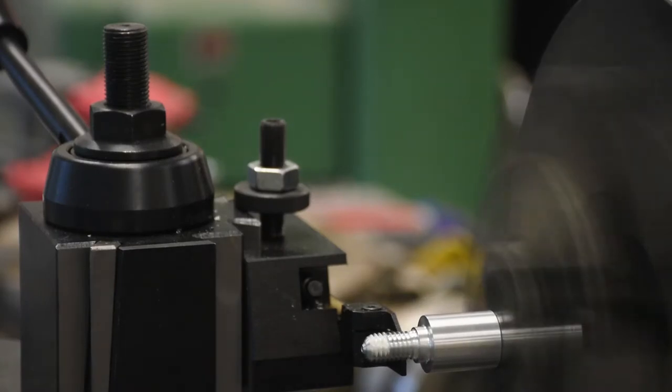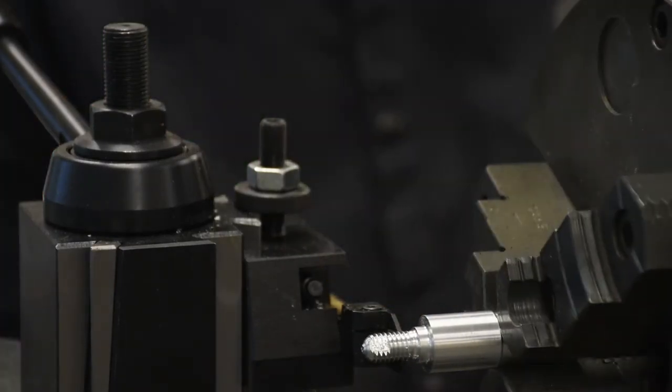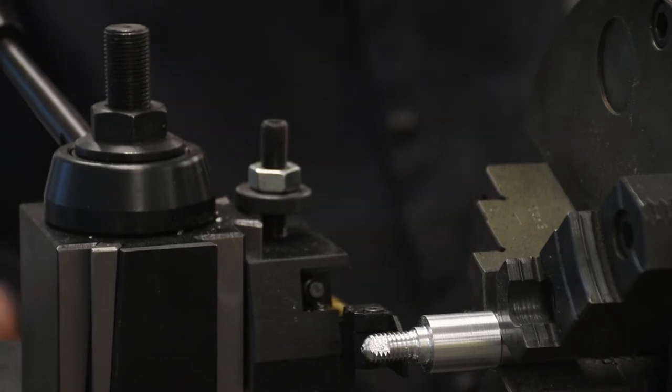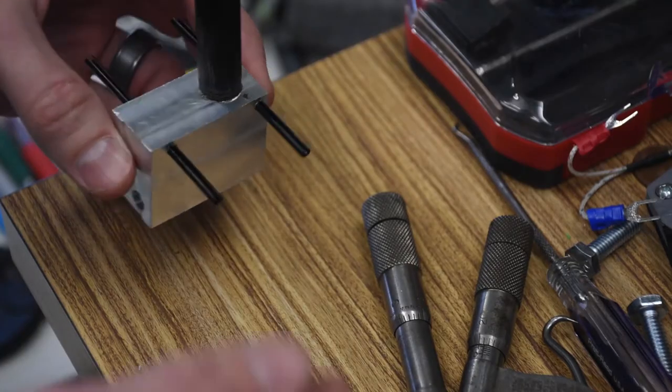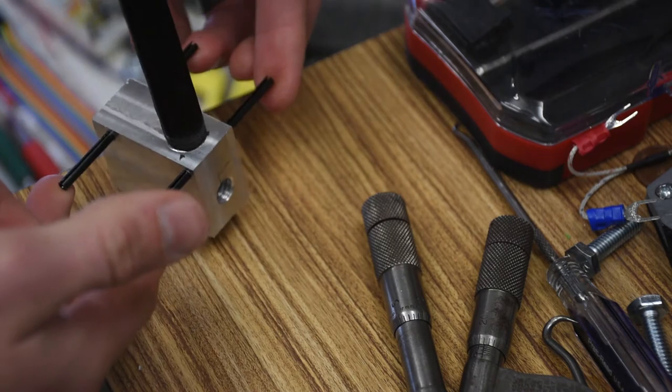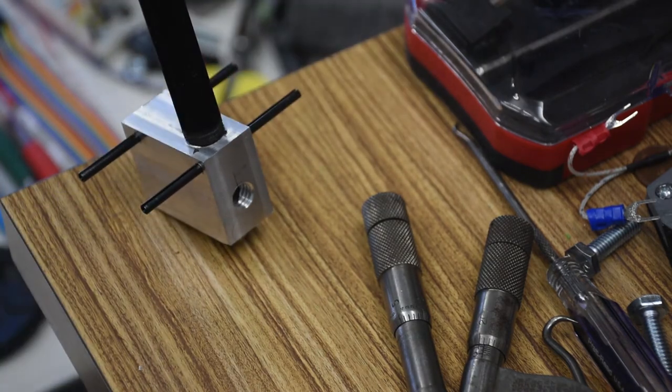This nozzle started life as a rectangular block and now it puts the wax exactly where it's wanted. And here's the completed hot end with the second gen feed tube screwed in place. The four roll pins will suspend it inside the head unit.